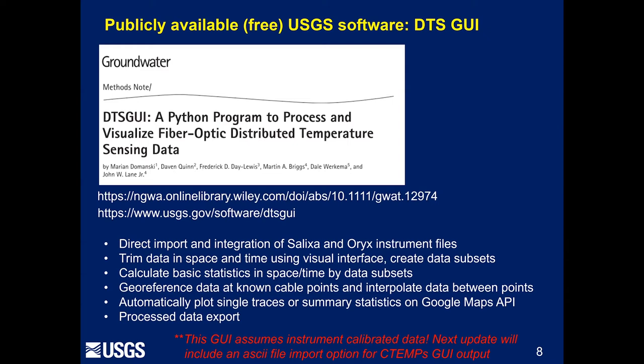To bring those files in, aggregate them, and then trim the data in space and time, create subsets of the data that you might be able to work with, bounce them out in ASCII files and work with them in other programs quickly. It calculates basic statistics such as standard deviation, min, max, and mean temperature by distance. It does the geo-referencing if you have known cable points or known optical distance that you can relate to a point on the earth's surface or a depth in the stream bed, so you can understand how the data relates to the real world rather than just a matrix of temperature on your computer. It'll automatically plot these — either single traces or summary statistics — on Google Maps in plan view.